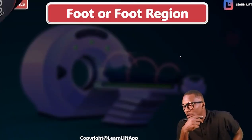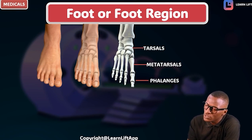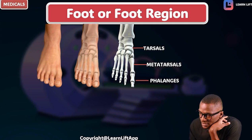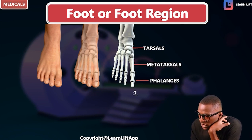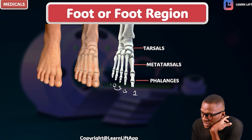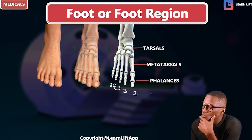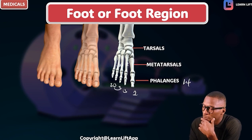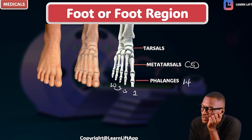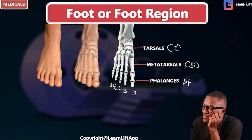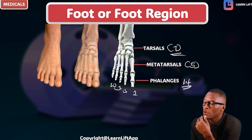Looking at the diagram of the foot: the phalanges are at the front. The big toe has two bones, and each of the other four toes has three. The five metatarsal bones are in the middle of the foot, and the seven tarsal bones are at the back. So we have seven tarsal bones, five metatarsal bones, and 14 phalanges. They all have joints which we'll discuss later.